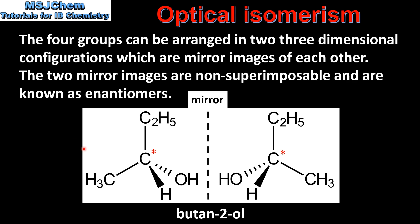Here we have the two optical isomers or enantiomers of butan-2-ol. When drawing optical isomers we use the stereochemical formula, which shows the spatial arrangement of atoms in a molecule. The two optical isomers are drawn as mirror images of each other with a mirror in the middle.